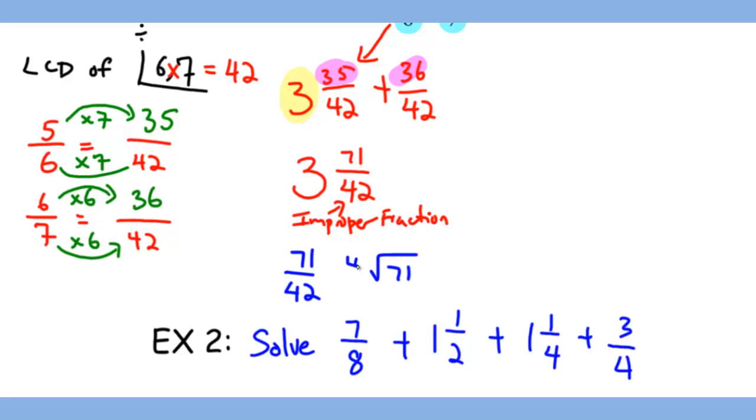42 goes into 71 only once with a remainder of 29. That means this equals 1 whole and 29 out of 42.